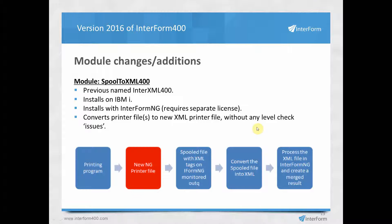The Spool to XML 400 module is able to convert an existing printer file into a new special XML printer file. If you replace the old printer file — for instance by placing the new one higher in the library list — you can enable your completely unchanged original program to create new XML spool files, which can then be converted into normal XML for processing in Interform NG.